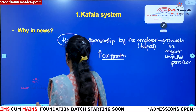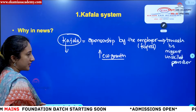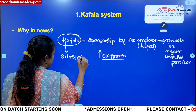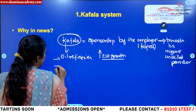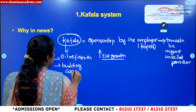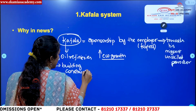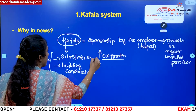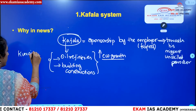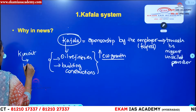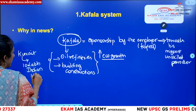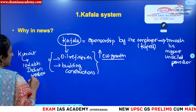Workers hired under the kafala system are mostly working in oil refineries, building constructions, and hotels. In Kuwait alone — where the fire incident happened — there are almost 10 lakh Indian workers, and most of them are under this kafala system.